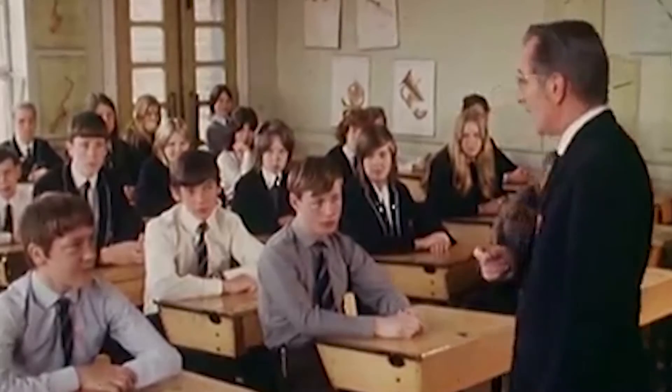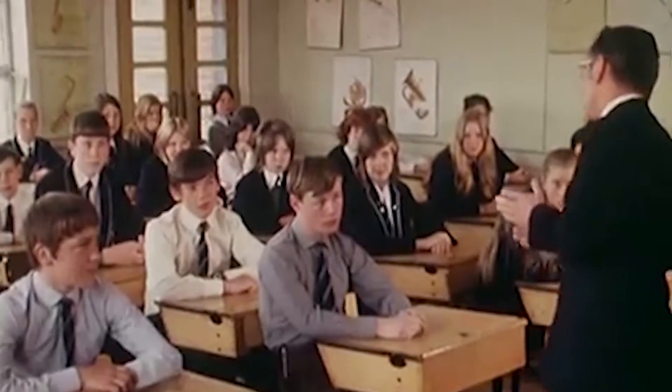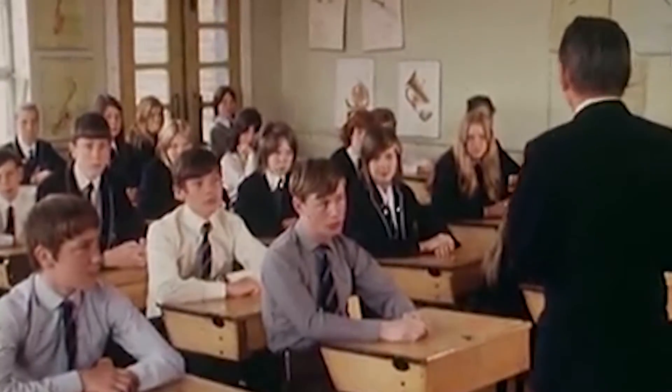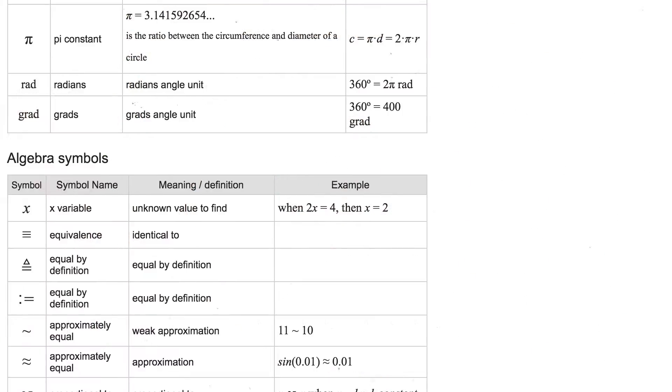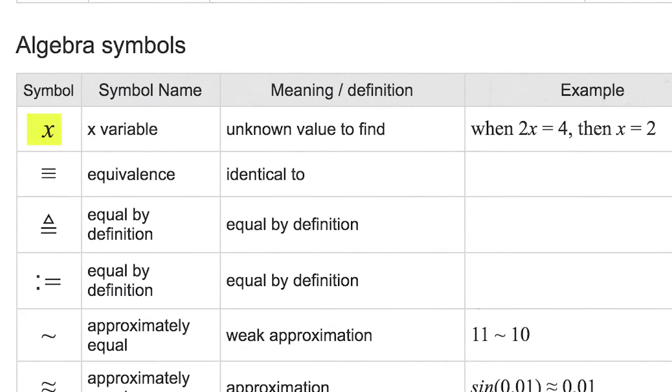Of course, all of these cultural connotations are derived from the math class. The algebraic symbol for the unknown in modern mathematics is X. But why X? Why not F, or T, or Q?